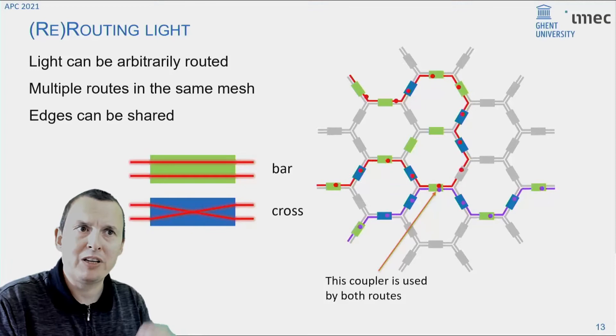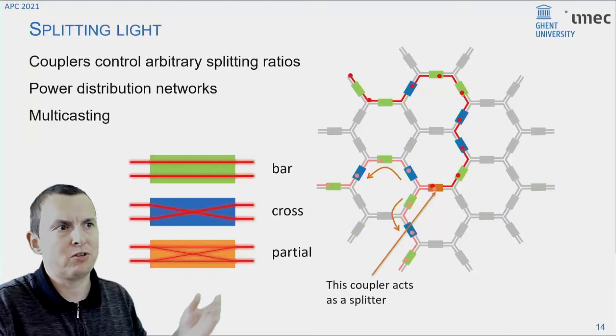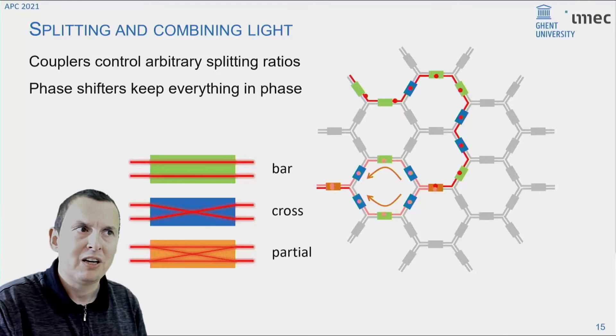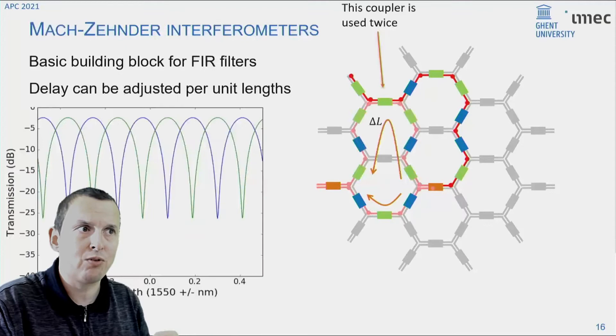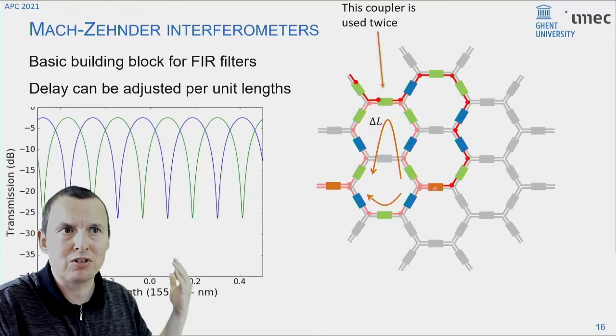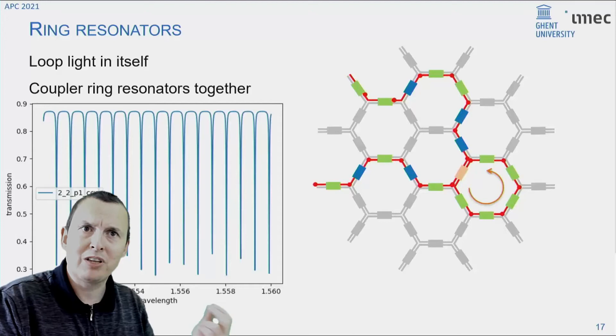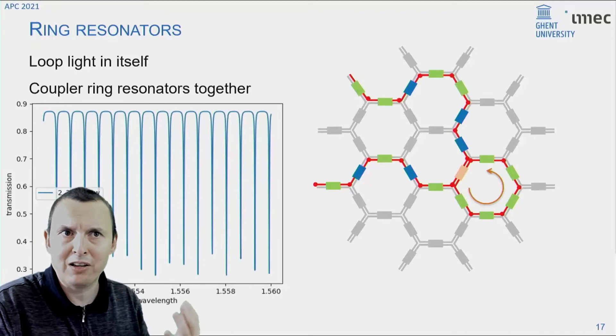And if you have these two components, you can essentially build these larger-scale meshes by hooking them up together, in which you can reroute your light just by switching your optical gates between a bar state and a cross state. You can even, because each gate is a four-port, you can even route multiple routes of light through the same gate. Now, it becomes more interesting when you use the gates not just in bar and cross state, but also in partial coupling states, because now you can redistribute the light through multiple paths in the circuit, and you can even recombine the lights. So now what you've created is essentially a programmable interferometer.